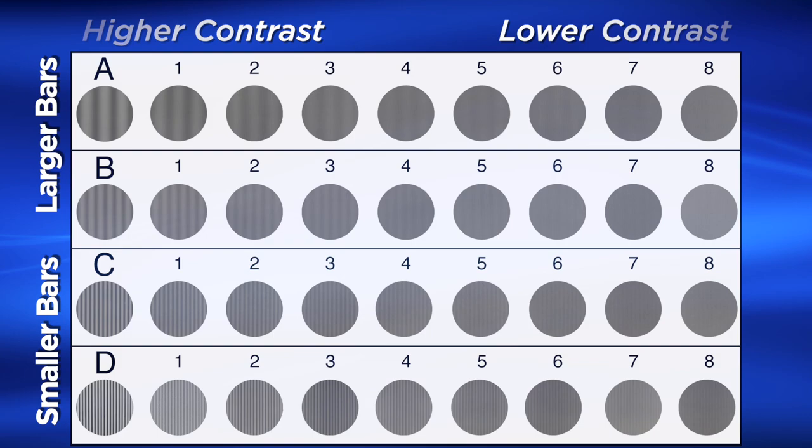Further, visual acuity measures only black and white. And as you know, the world is not made of black and white — the world is made of shades of gray, or varying shades of contrast.